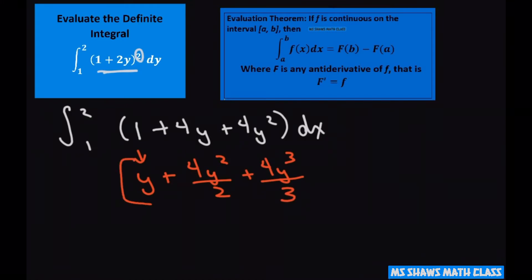Alright, so we're going from 1 to 2. I'm going to go ahead and 4 divided by 2 is just 2. So I'm just going to change that to 2 because everything else is okay. So that's just going to be 2.